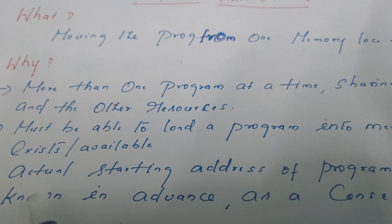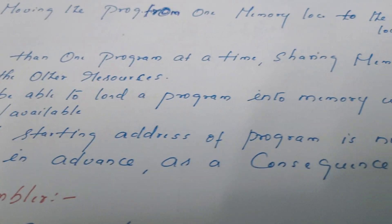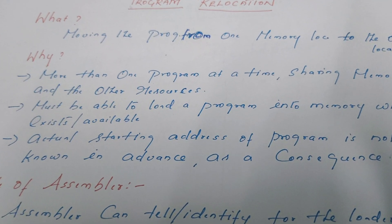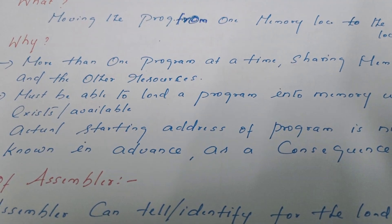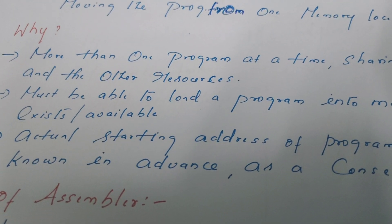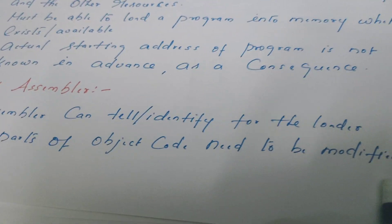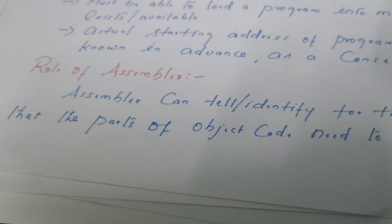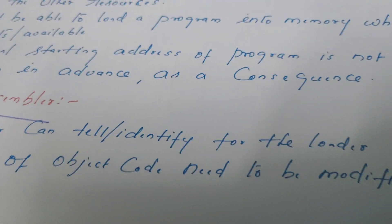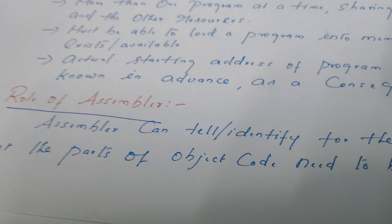The actual starting address of the program is not known in advance. As a consequence of this, let us understand the role of the assembler in program relocation. The assembler does not know to which address the program is to be loaded, but it can help the loader. It can identify for the loader which parts of the object code need to be modified when the program is to be relocated.